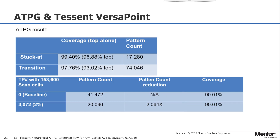Here shows the coverage data obtained using this flow for both stuck-at and transition ATPG. We achieved 99.4% stuck-at coverage and 97.76% transition coverage for the entire chip. And if we add a Tessent VARCA point, adding a number of cells equal to only 2% of scan cells to the DFT, about 2x pattern reduction can be achieved.